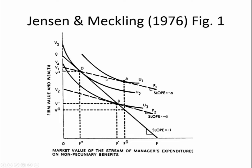You could have indifference curves that intersect at more than one point, but they would be lower and to the left than U2, so we would not consider them. We want this point where the curve is exactly tangent. So we know that the manager, if they own 100% of the firm, will choose to operate at point D, where they consume F-star in non-pecuniary benefits, and the value of the firm at that point is V-star. The value of the firm has to be lower than it would be if they consumed no non-pecuniary benefits, and so they are willing to accept a reduction in their wealth for the happiness they receive from consuming F-star.